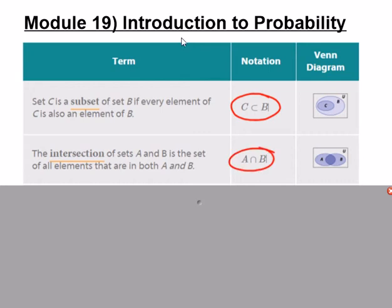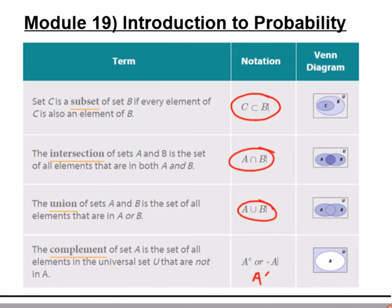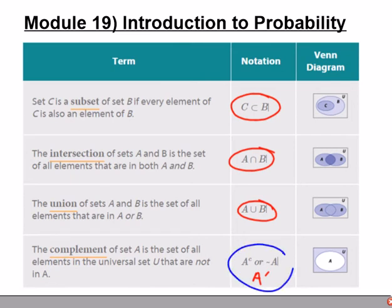An intersection is kind of like an overlap. The notation is an upside-down U, and it represents shared elements between two sets. A union includes all the numbers — A union B means all elements of set A and set B combined, just as you've seen with interval notation. The complement means every number that's not part of a set.